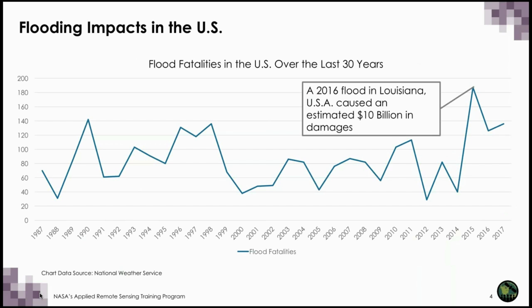This chart shows flood fatalities in the U.S. over the last 30 years, not including hurricane-related flooding. In August of 2016, prolonged rainfall resulted in catastrophic flooding in the state of Louisiana. Thousands of houses and businesses were submerged. Louisiana's government called the disaster a historic, unprecedented flooding event and declared a state of emergency. 13 deaths resulted from that particular event, and an estimated $10 billion in damages. In the world's largest coastal cities alone, if flood protection measures are not implemented, flood damages could amount to $1 trillion per year by 2050.